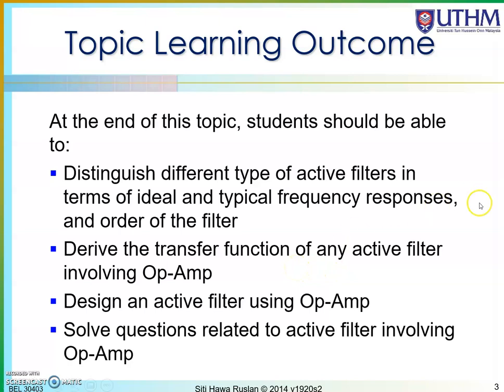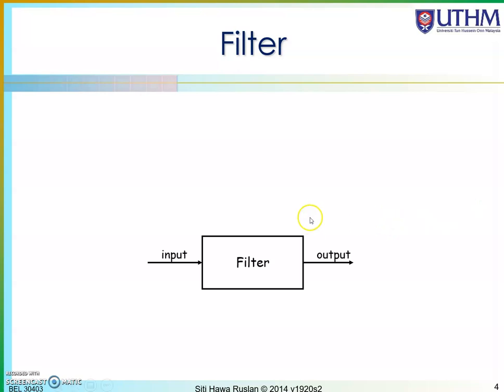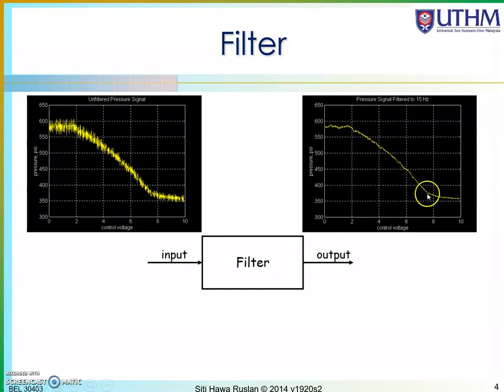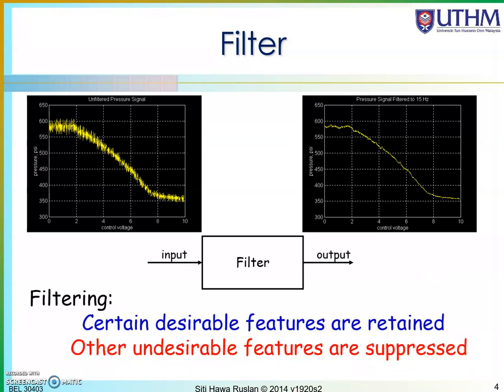There are four learning outcomes for this topic. A filter is an electronic circuit where, for example, the input is a signal with a lot of noise in it; we filter it and have a very clean signal at the output. A filter is simply a circuit that filters out the unwanted signal.